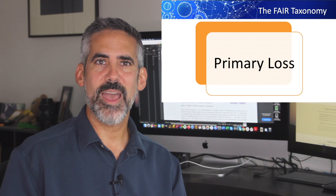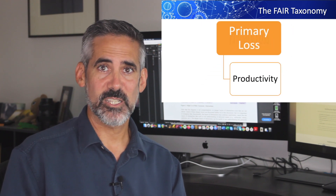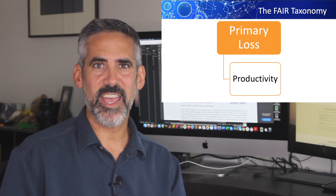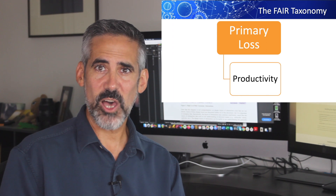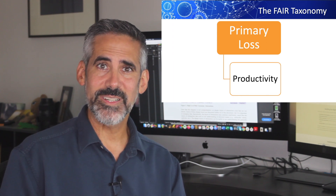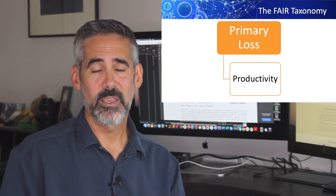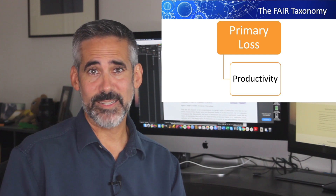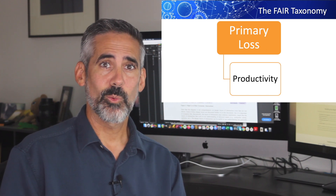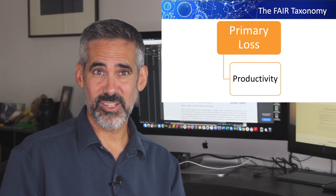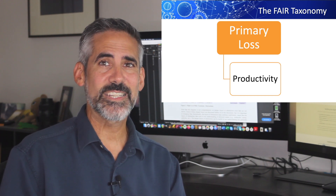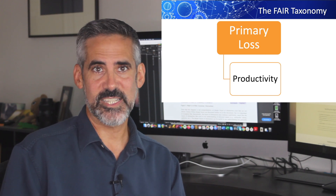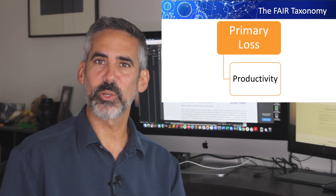Working down the primary loss side, we start with productivity losses. This encompasses things like personnel sitting idle, drawing a paycheck as their systems are down. It also includes lost revenue because of the incident. It's important to note that some revenue may be delayed and not lost. For instance, if I drive down to Blue Box Retailer to buy some socks and they're closed because of a power outage, will I just go back tomorrow — meaning there's no lost revenue, only delayed? Or will I continue down the road to Red Box Retailer and buy my socks there, resulting in a lost sale to Blue Box? These losses get totaled up under productivity.